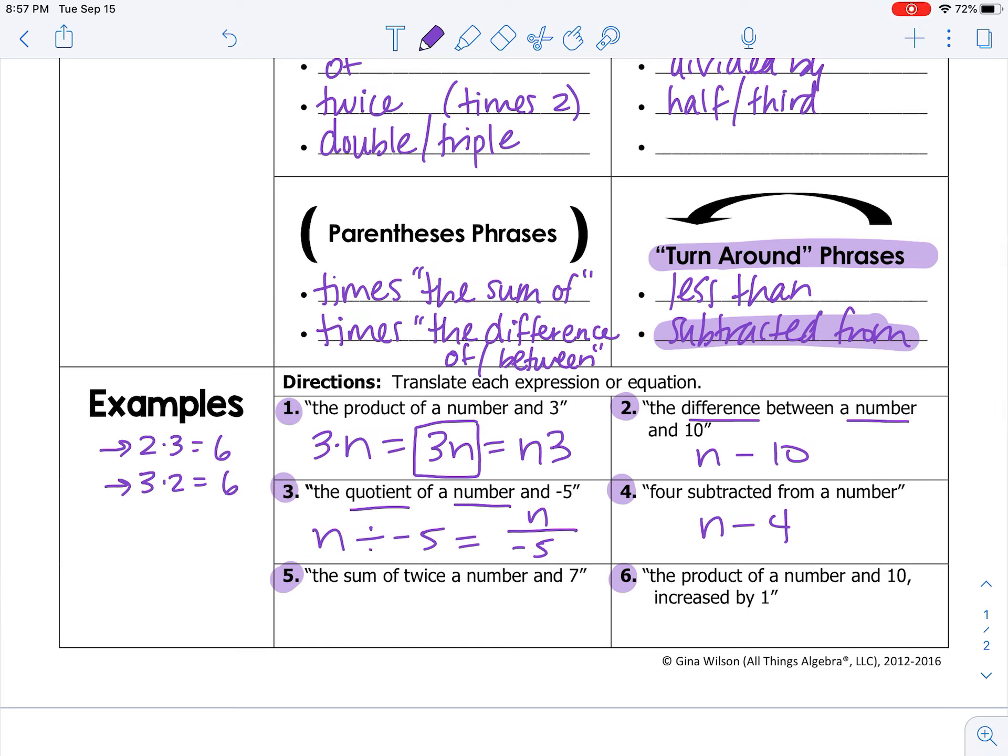The sum of twice a number and seven. So sum is plus. Twice a number is two times a number. So 2n. The sum is between the twice a number and seven. So 2n plus seven.